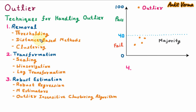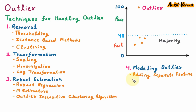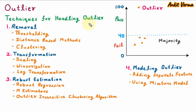The fourth category under techniques for handling outlier is modeling outlier — the outliers are explicitly modeled as a separate group. The first is adding a separate feature, where a new feature is added which indicates whether a data point is an outlier or not. Next is using a mixture model — the model is trained in such a way that it assumes data is coming from multiple distributions, out of which one distribution is the outlier. So these are all the techniques for handling the outlier.